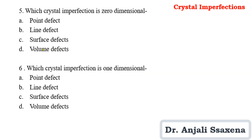Question 5: Which crystal imperfection is zero-dimensional? The answer is point defect — it is a zero-dimensional defect. Question 6: Which crystal imperfection is one-dimensional? Line defects are one-dimensional. To summarize: point defects are zero-dimensional, line defects are one-dimensional, surface defects are two-dimensional, and volume defects are three-dimensional.